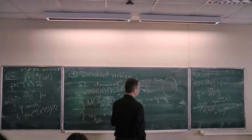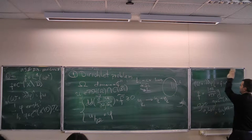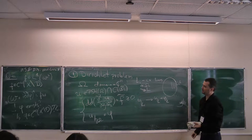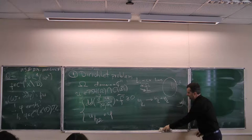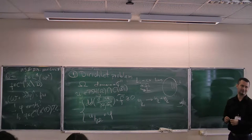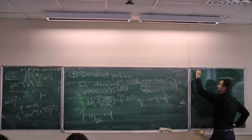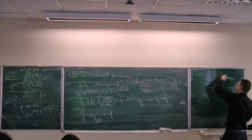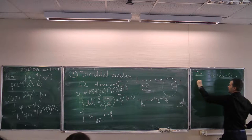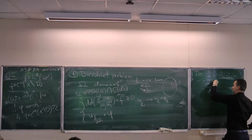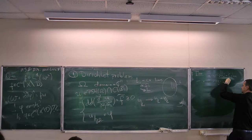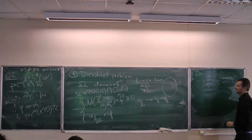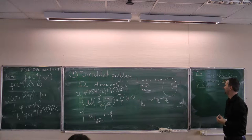Now let me mention the fundamental result — the local analog of the Calabi-Yau theorem — which was surprisingly proven later than Calabi-Yau. It is due to four mathematicians: Caffarelli, Kohn, Nirenberg, and Spruck. The theorem is well known as the CKNS theorem. It was also proven independently, and even earlier, by Krylov.